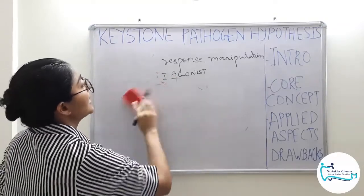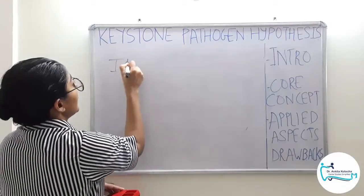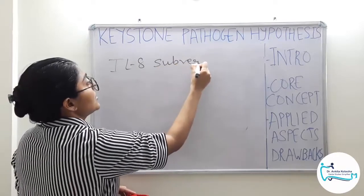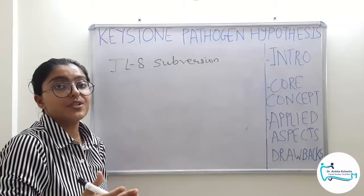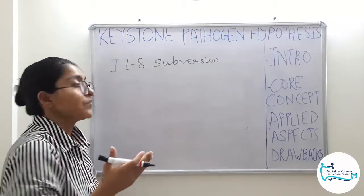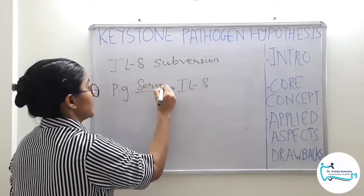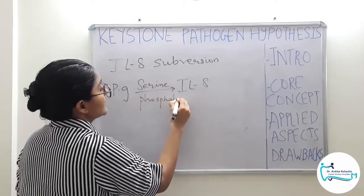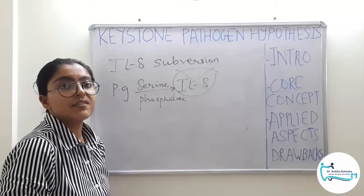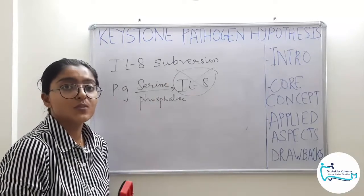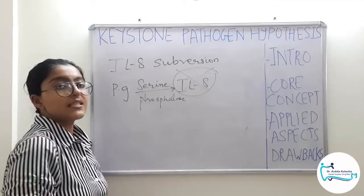The next mechanism is interleukin-8 subversion. Interleukin-8 is a chemokine — a cytokine mainly involved in chemotaxis. It sends signals to neutrophils to arrive at the site of injury and form a neutrophil wall of defence. P. gingivalis blocks the synthesis of interleukin-8 by releasing serine phosphatase, which inhibits IL-8 synthesis. With no interleukin-8, neutrophils won't receive enough chemotactic signals to arrive at the site of injury, meaning delayed or totally prevented wall formation. This mechanism allows P. gingivalis and other microorganisms to grow and multiply.